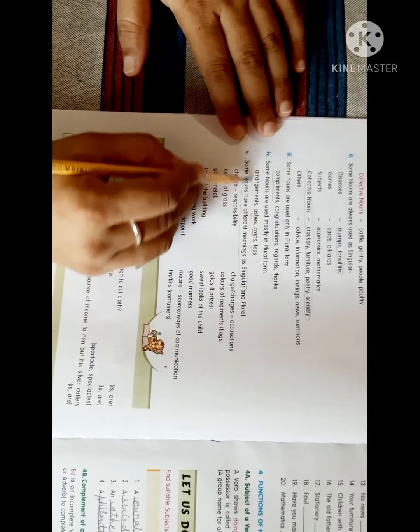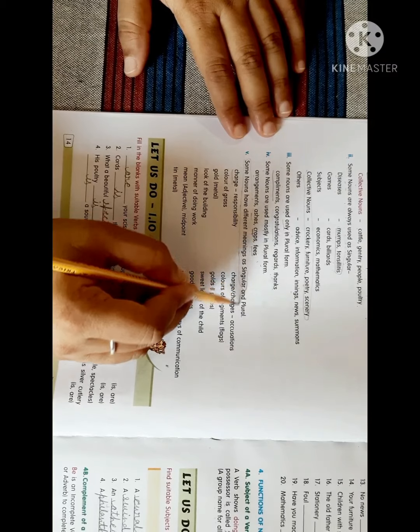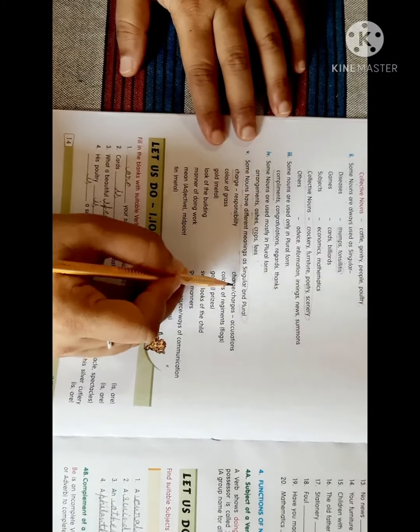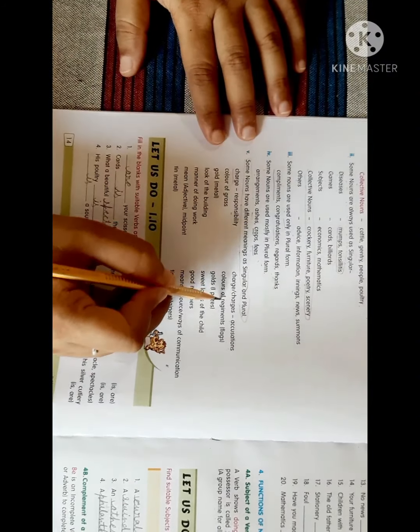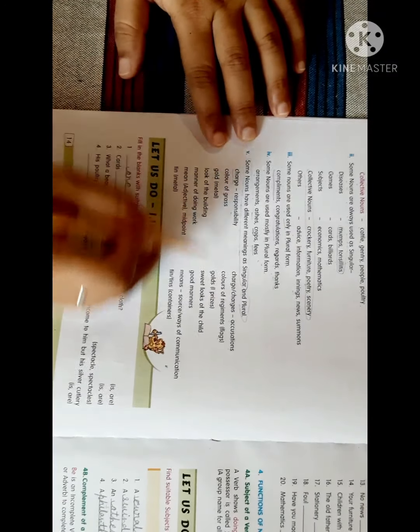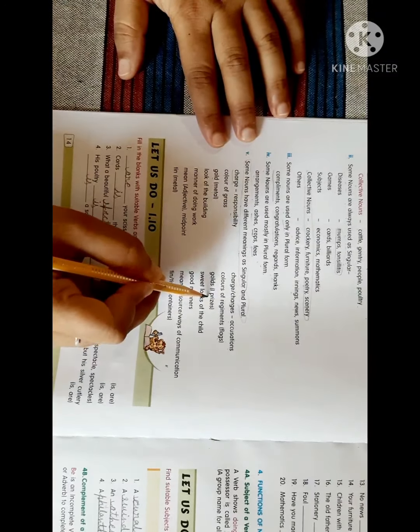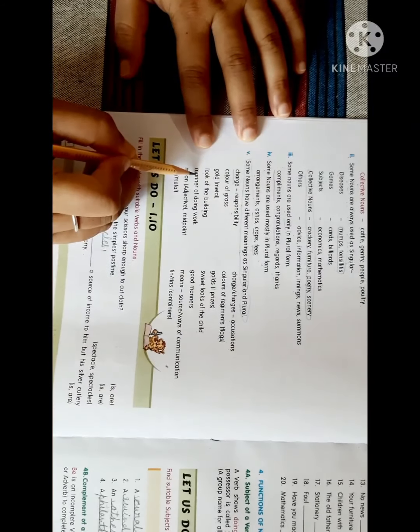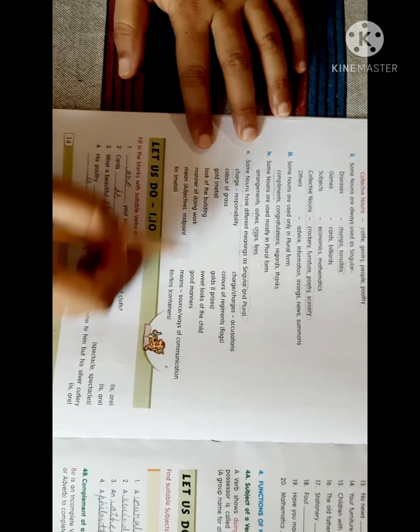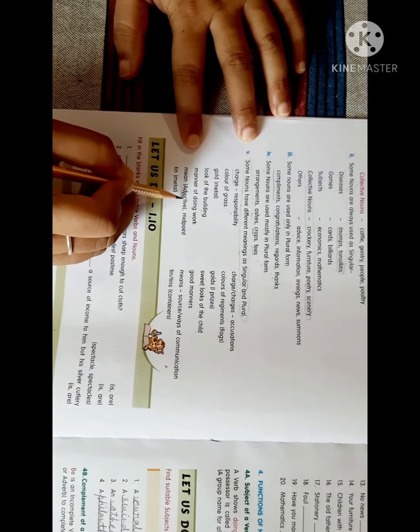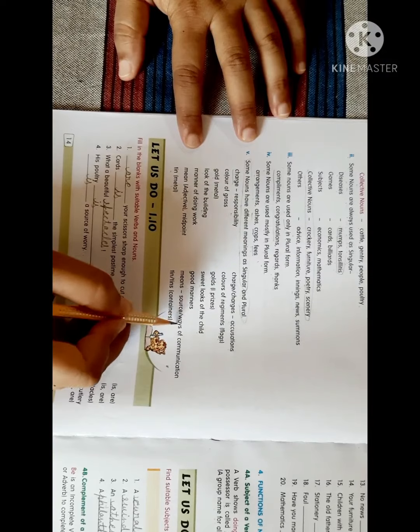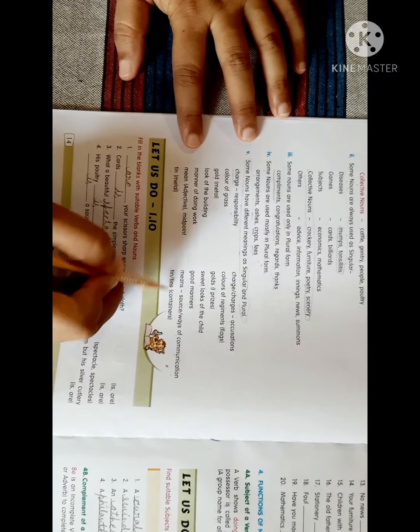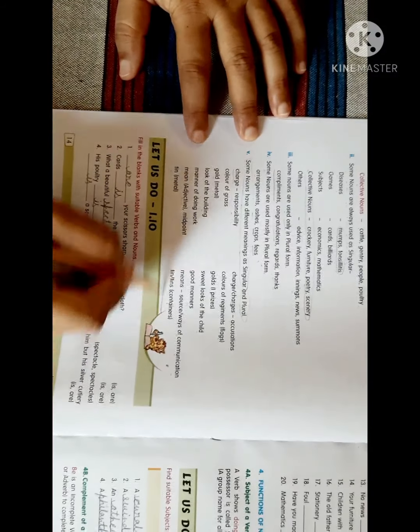Come to the fifth: some nouns have different meanings as singular and plural. Charge means responsibility; charges means accusations. Color of grass; colors of regiments, like flag. Gold is metal; golds is a first prize. Look of the building; sweet look of the child. Manner of doing work; good manners. Mean is adjective or midpoint; means is source or ways of communication. Tin is metal; tins means containers.